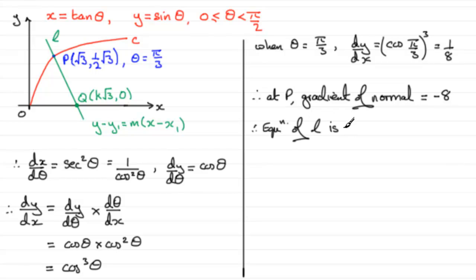it's going to be y minus y1, y1 being the value of P here, which is going to be half root 3, or root 3 over 2, equals m, the gradient, which is minus eight, multiplied by x minus x1, which is going to be root 3 here. So minus root 3.